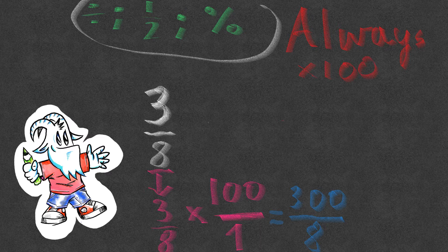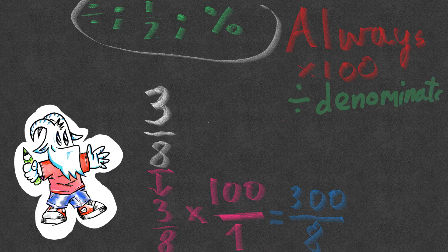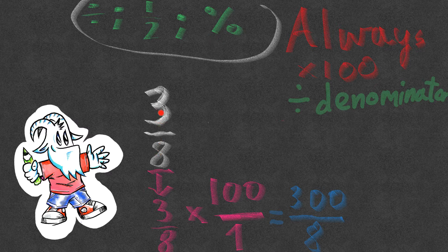My second step is to divide by the denominator. Division, fractions, and percentages are the same idea, so if I want to know the percentage value of three eighths, I need to divide 300 by 8.